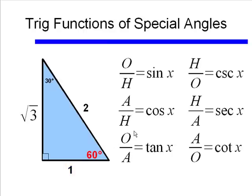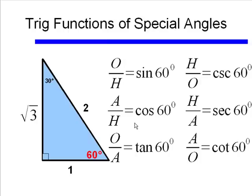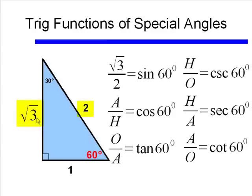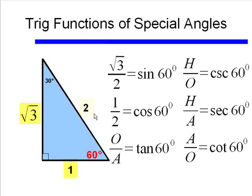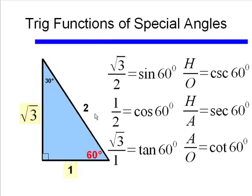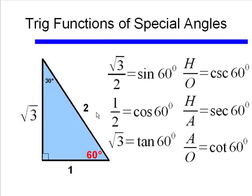Our sine of x is opposite over hypotenuse. Now we're talking about a specific angle — 60 degrees. So the sine of 60 degrees is the opposite over the hypotenuse, or square root of 3 over 2. Likewise, the cosine of 60 degrees is the adjacent over the hypotenuse, or 1 over 2. And the tangent is opposite over adjacent, or square root of 3 over 1, which we can simply write as square root of 3.